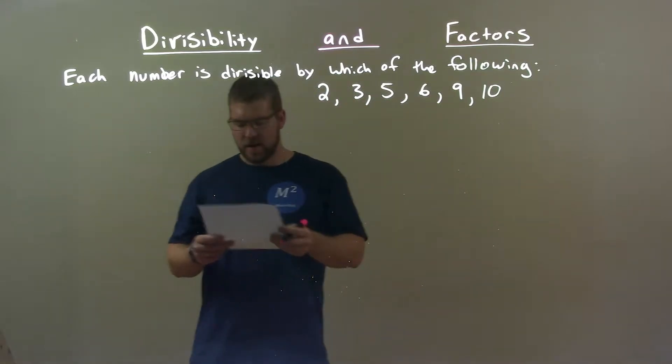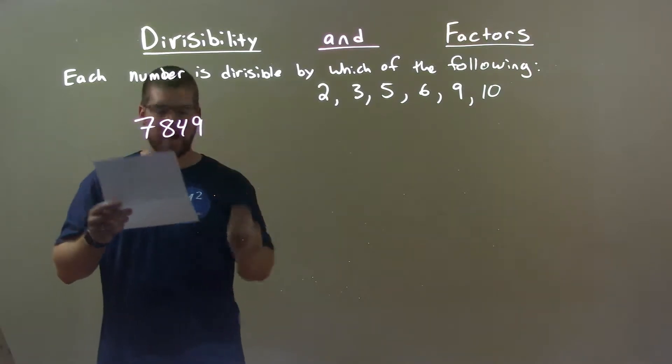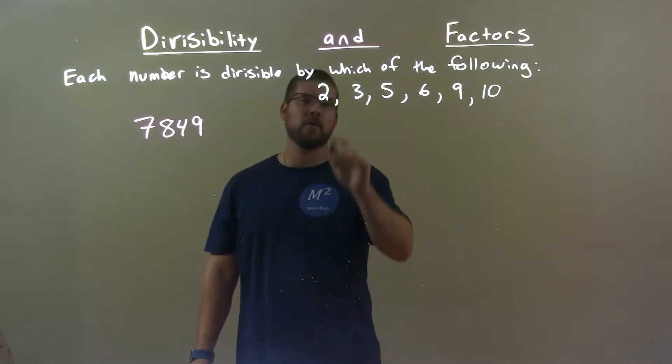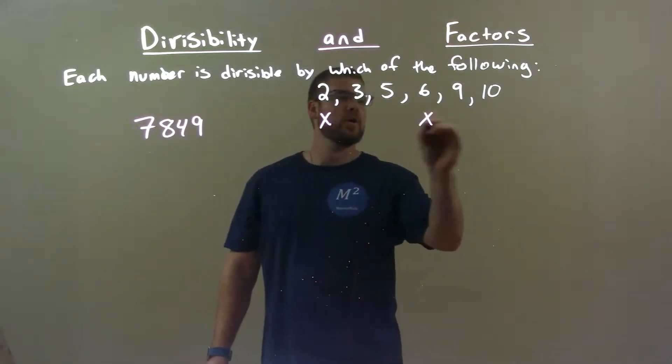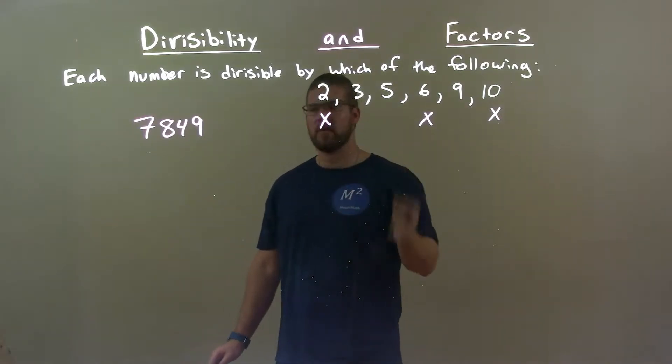So if I was given this number 7,849, the first thing I see here is this number is an odd number, so my evens will not work. Now let's check the other numbers.